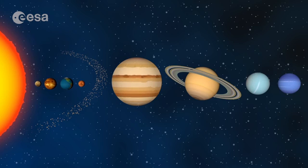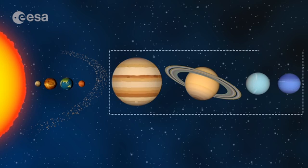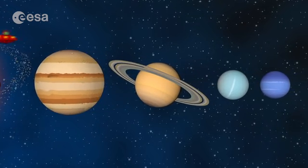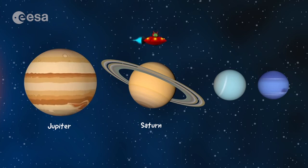Further away from the sun, there are four truly huge planets. Much, much bigger than the Earth. There are Jupiter and Saturn, the gas giants, and Uranus and Neptune, the icy giants.